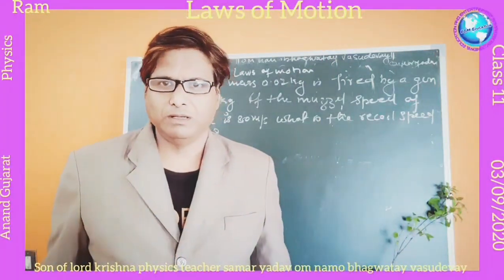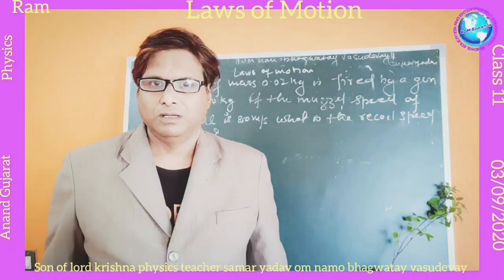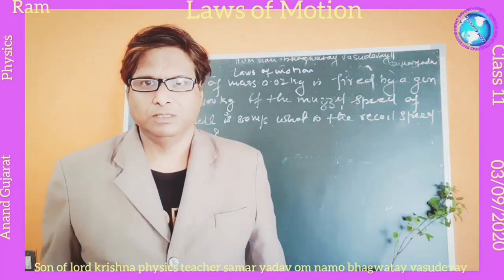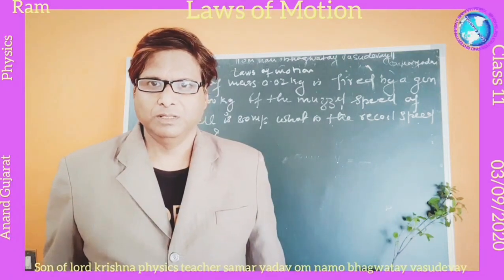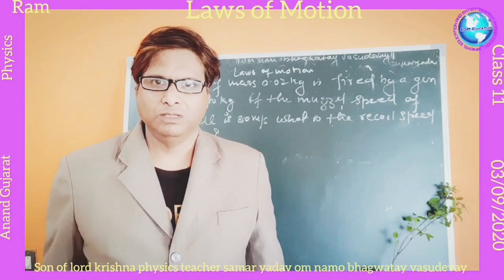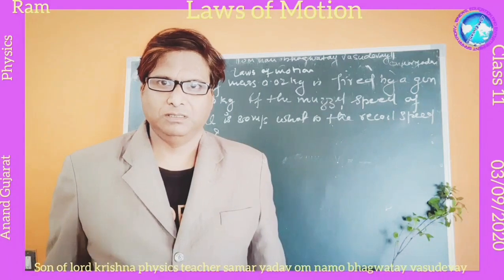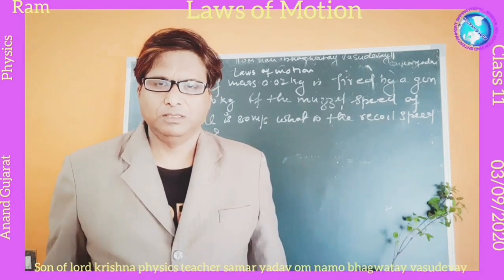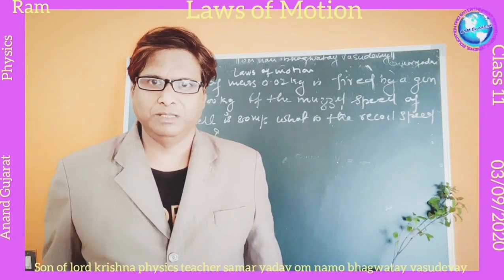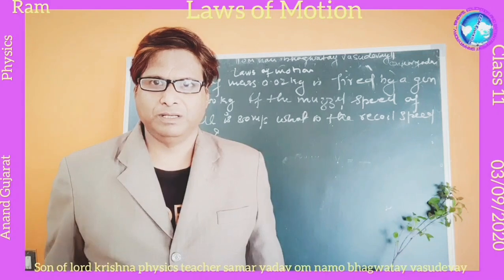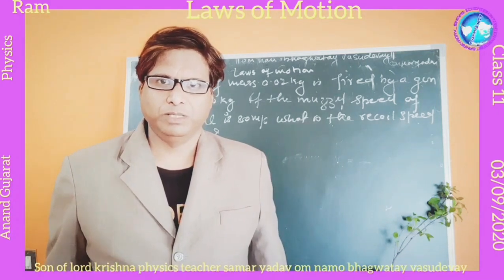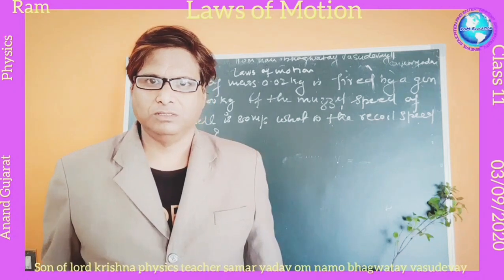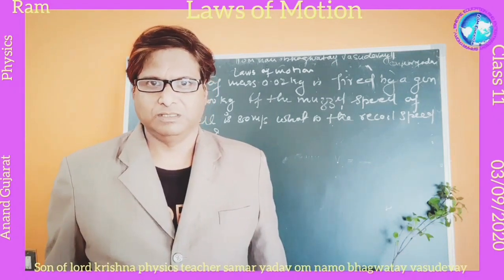Today we are going to see an event based on laws of motion. We are going to talk about the law of conservation of linear momentum. When the resultant external force on the system is zero, then the total momentum of the system is constant. This statement is called the law of conservation of momentum. This is true for microscopic particles like electrons and protons, and also for macroscopic bodies like celestial bodies. This is a fundamental law used to solve problems.